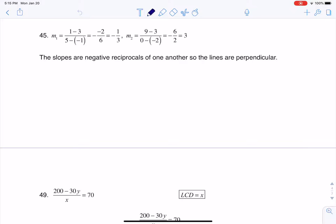So let me just write off to the side here. For number 45, the first set of ordered pairs we got was (-1, 3) and (5, 1). Then the second set of ordered pairs we got was (-2, 3) and (0, 9).